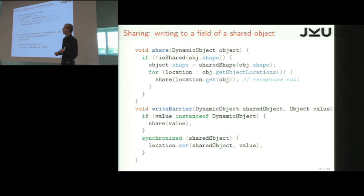So when you write on a shared object, if the value is actually an object kind of field, then we share it. And we share it, unless it's already shared. And what we do to share it, is we change its shape.